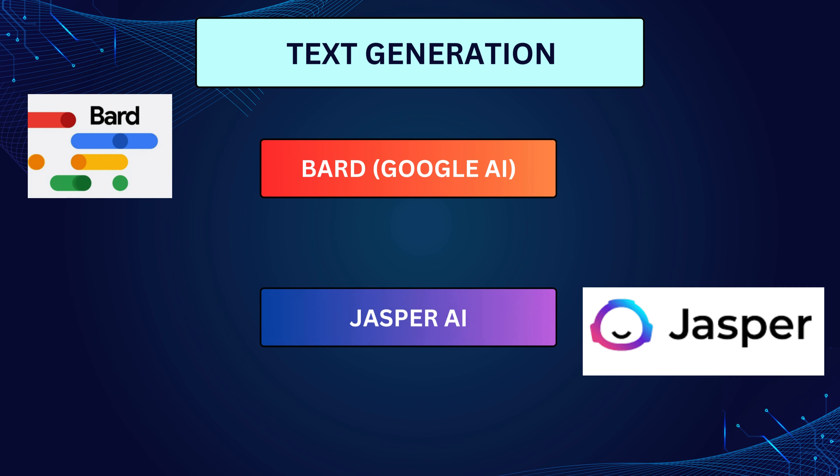Text generation. BARD, Google AI — currently available in limited access, BARD showcases Google's advanced language model capabilities. It excels at generating different creative text formats like poems, code, scripts, musical pieces, and emails, based on user prompts and instructions.